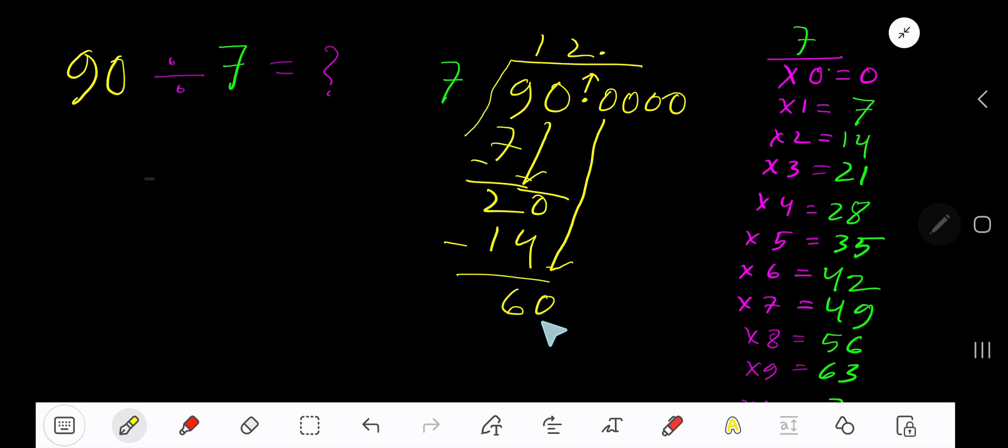7 goes into 60 how many times? 9 times 63 which is greater, so 8 times. 8 times 7 gives you 56. If you subtract, you are getting 4. Bring down another 0. 7 goes into 40 how many times? 6 times 42 which is greater, so 5 times.